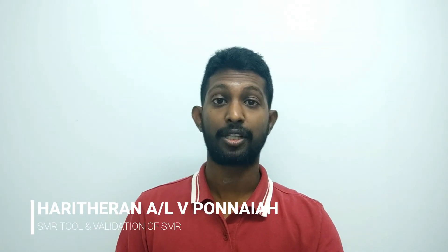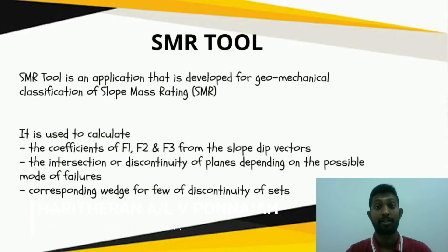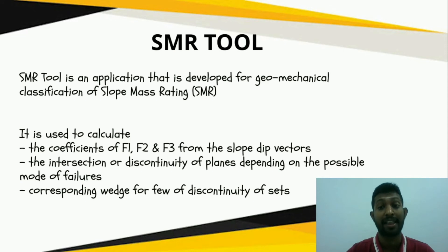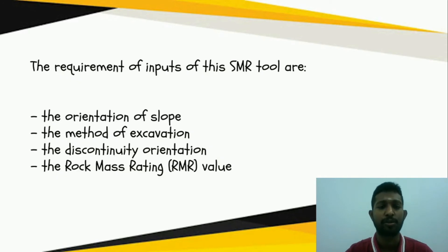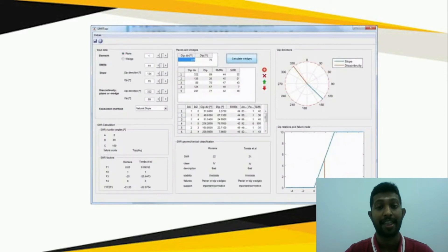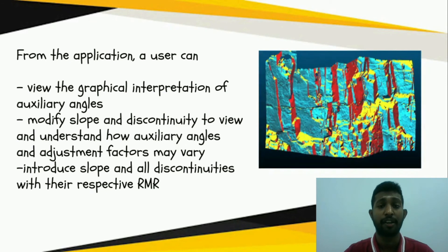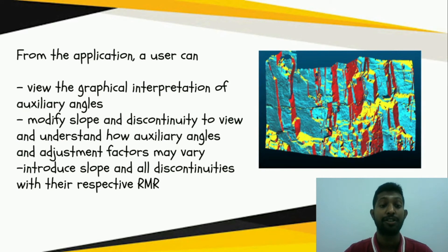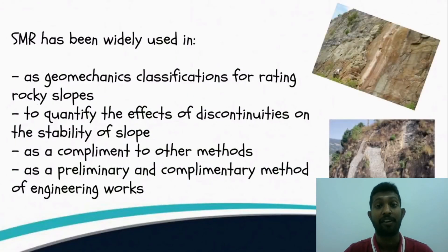The SMR Tool is an application developed for geomechanical classification of Slope Mass Rating. It calculates the coefficients of F1, F2, and F3 from the slope dip vectors, the intersection of discontinuity planes depending on possible modes of failure, and the corresponding range for each discontinuity set. Required inputs are: orientation of slope, method of excavation, discontinuity orientation, and rock mass rating value. Users can view graphical interpretations of auxiliary angles, modify slope and discontinuity parameters, and input all discontinuities with their respective rock mass rating values.